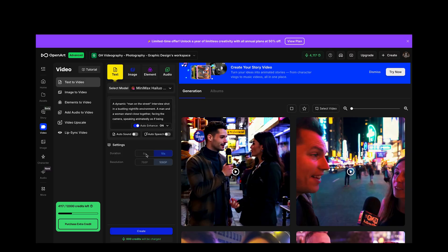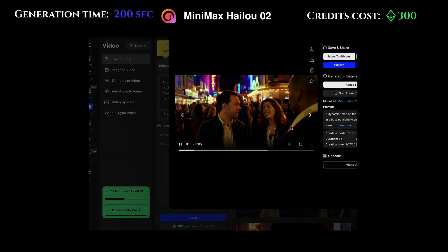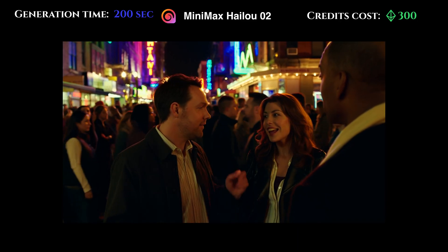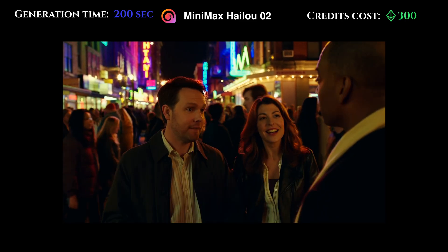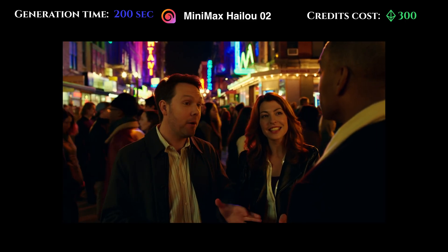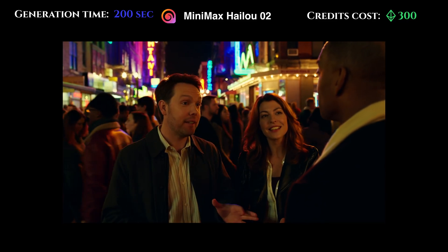Now we have MiniMax HeyLou. For a six-second video it's 300 credits, and for a ten-second video it's 600 credits. The cheapest option for HeyLou MiniMax is 150 credits for six seconds. That's pretty darn good — I don't really see anything wrong with that, other than maybe the text in the background looks a little weird on first glance. Without looking too closely, very, very good.